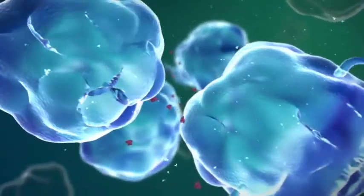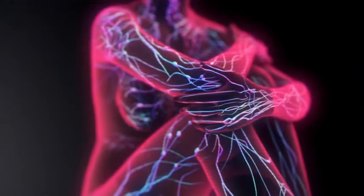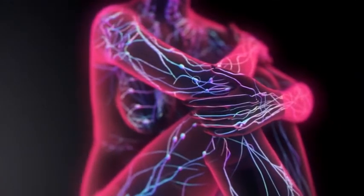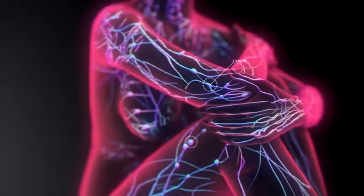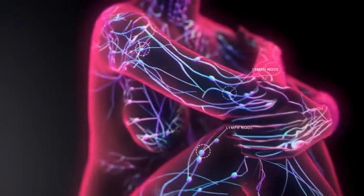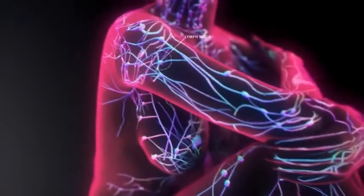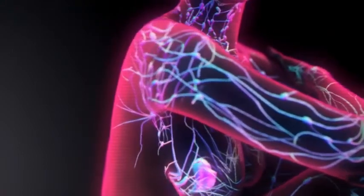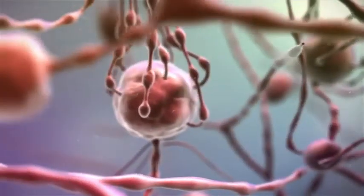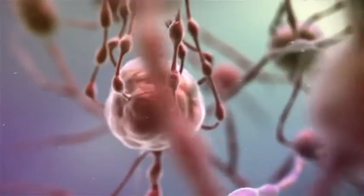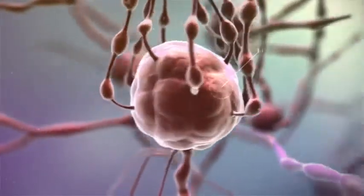The macrophages, therefore, go to the lymph nodes in our body in order to warn other cells of the immune system that an inflammatory response is taking place. These lymph nodes are important with regard to the defense of the body. Lymph nodes are information centers where cells of the immune system meet in order to exchange information.